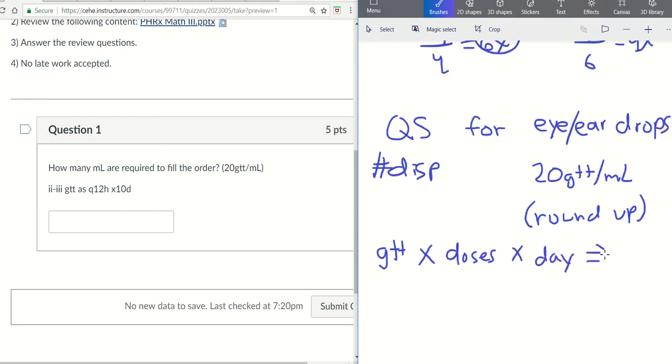That's going to give us total drops. Then, once we figure that out, we'll divide by the 20 drops to find ml's.